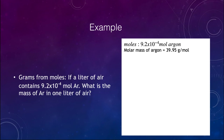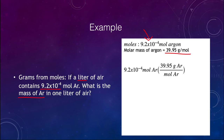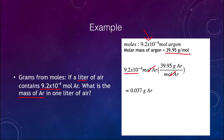Now let's find grams from moles using argon gas. If a liter of air contains 9.2 × 10⁻⁴ moles of argon, we want to find the mass. We look up the molar mass of argon — 39.95 grams per mole — and multiply: 9.2 × 10⁻⁴ moles × 39.95 grams per mole. The moles cancel, leaving grams of argon, giving 0.037 grams of argon gas per liter of air. It is important to carry your units through to make sure you place the molar mass in the correct position.